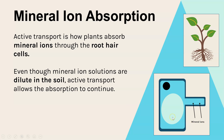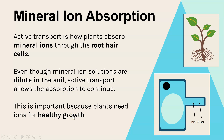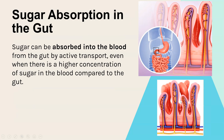The plant still needs lots of mineral ions continuously because those mineral ions are really important for the plant to be able to grow healthily. That is why active transport occurs — to make sure those mineral ions are moved against the concentration gradient into the plant.